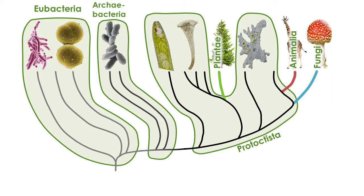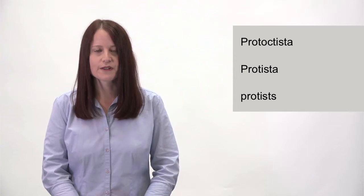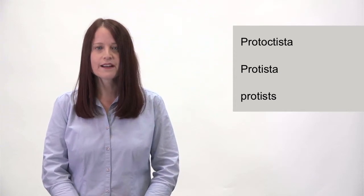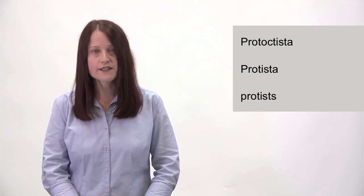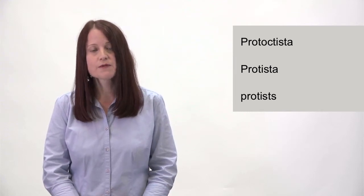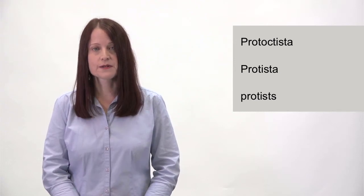First I'll show you the protoctista, which are all eukaryotes that are neither plants, nor animals, nor fungi. The protoctista are either unicellular, meaning an organism that consists of only one cell, or they form colonies, and some species are multicellular, but they're always rather simple organisms.